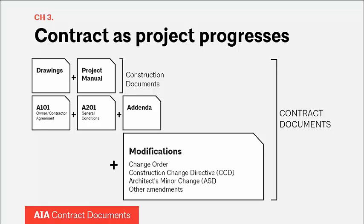Key takeaways: construction documents do not equal contract documents. The drawings and specs are part of contract documents — they describe the project scope and are enumerated in the agreement between owner and contractor, listed in the A-101. What are not contract documents? Instructions to bidders, other bid information including the contractor's bid — unless specifically included in the agreement — are never included. Submittals such as shop drawings are not part of the contract documents, and RFIs are not part of the contract documents.